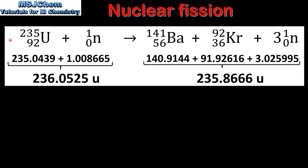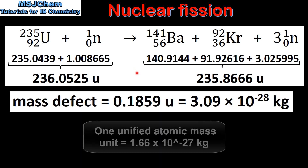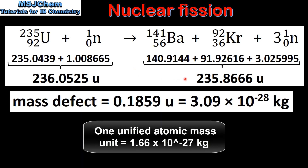Next we will calculate the energy released in a nuclear fission reaction. In this reaction we have the nuclear fission of uranium-235. The products are barium-141, krypton-92 and 3 neutrons.